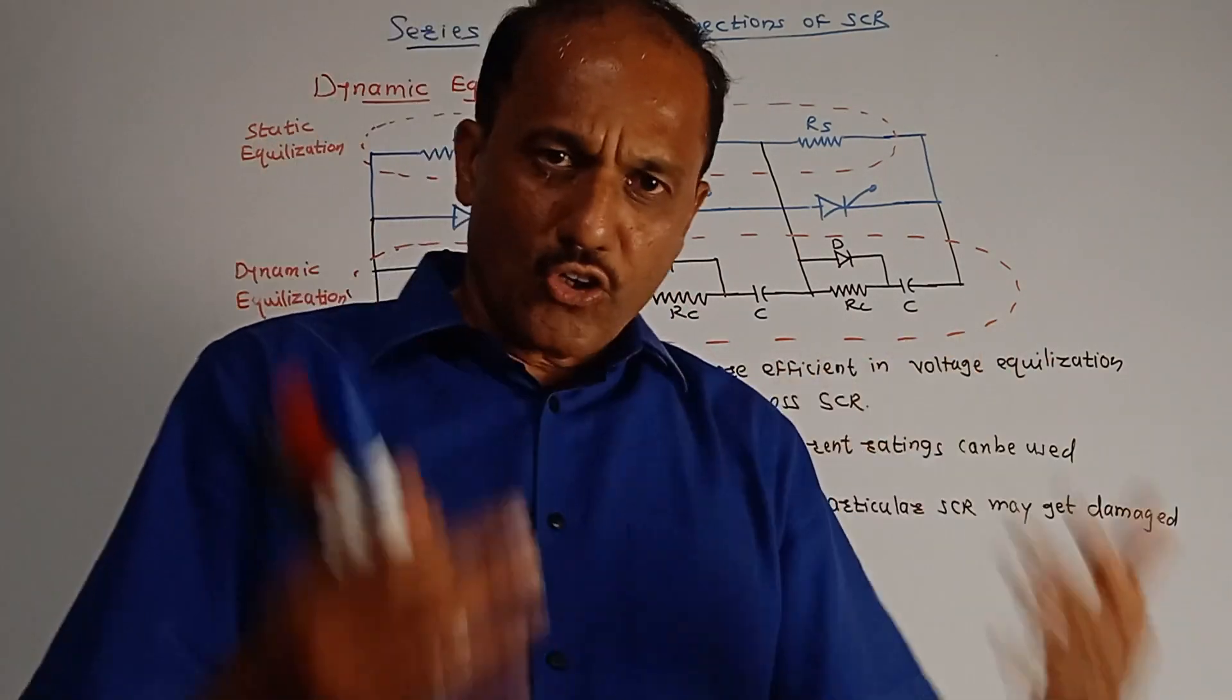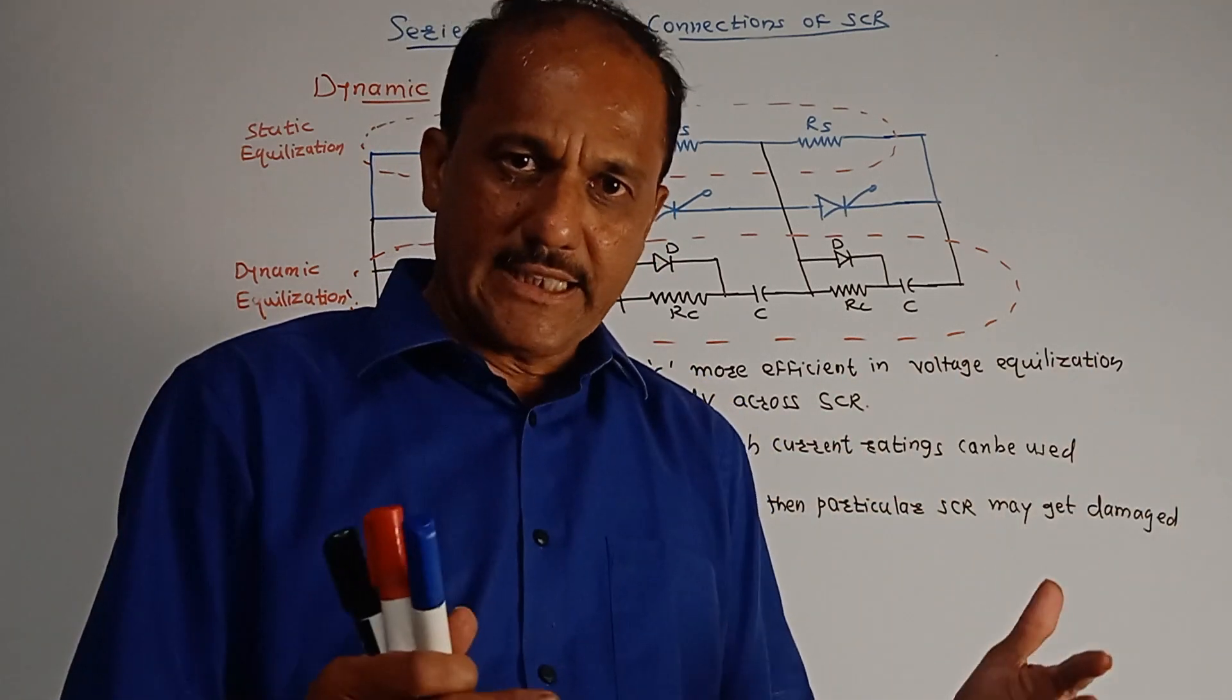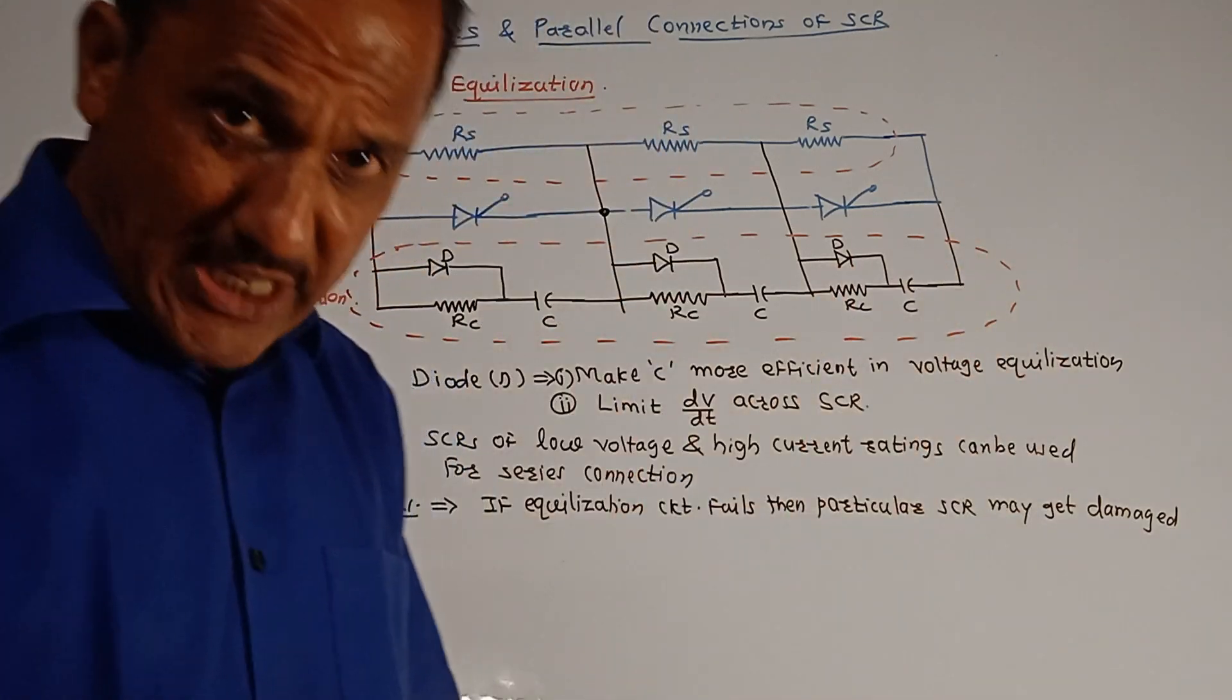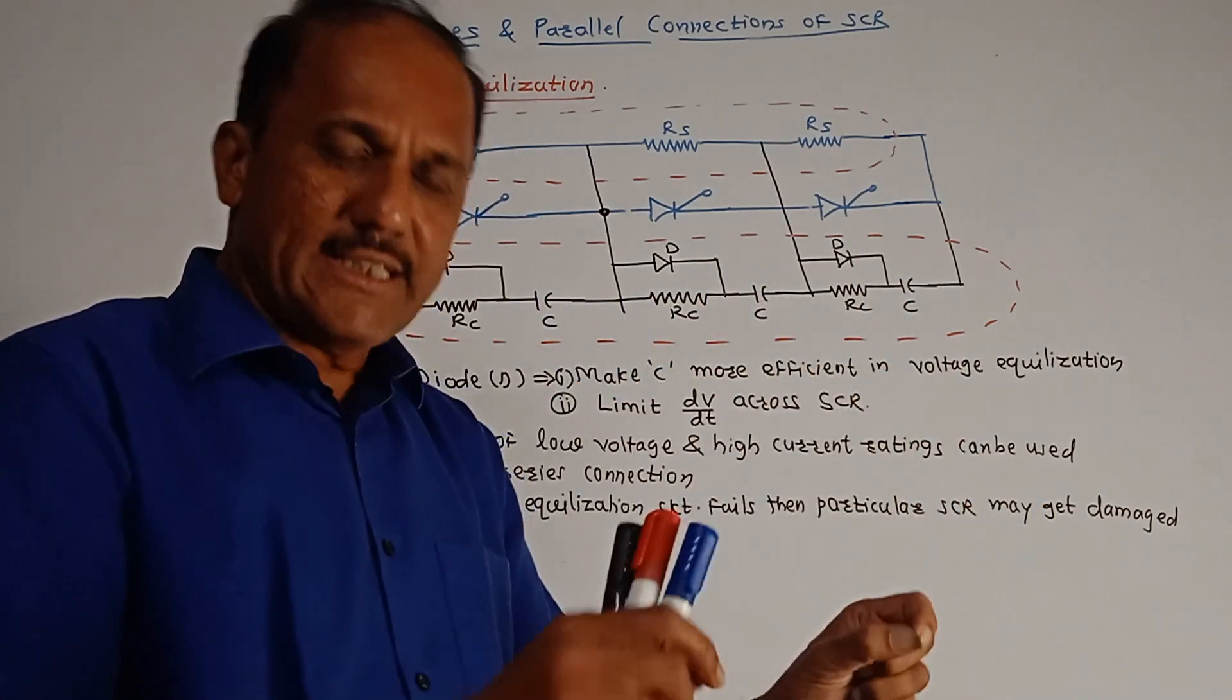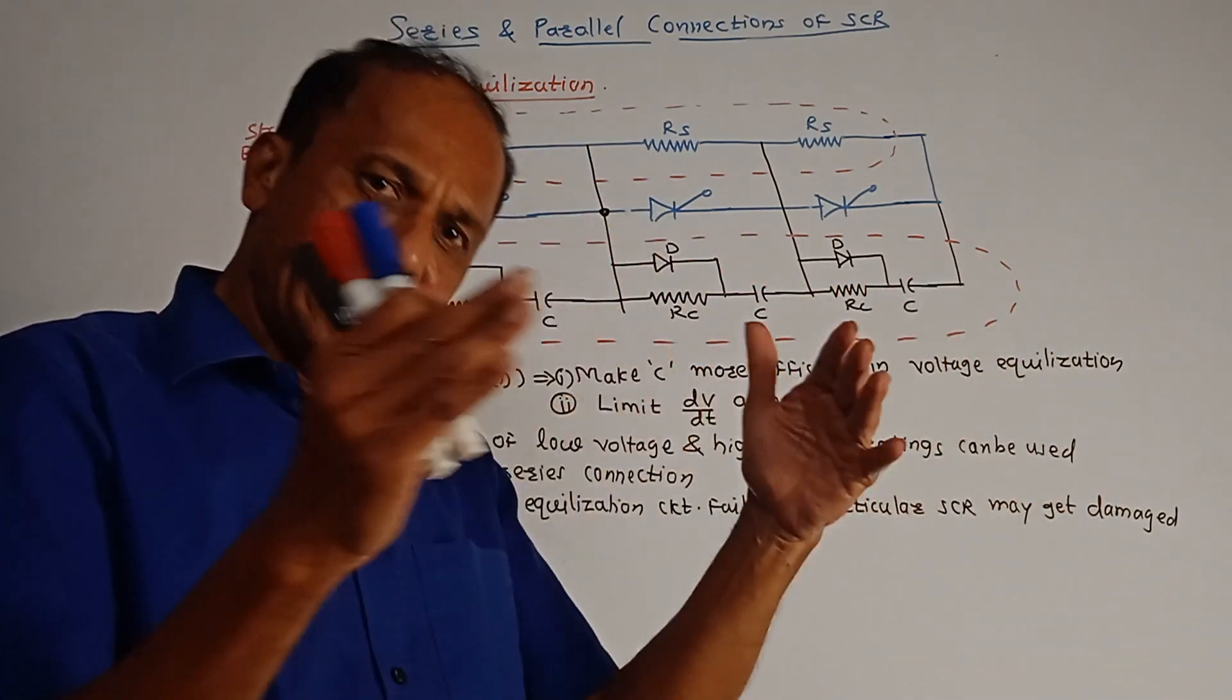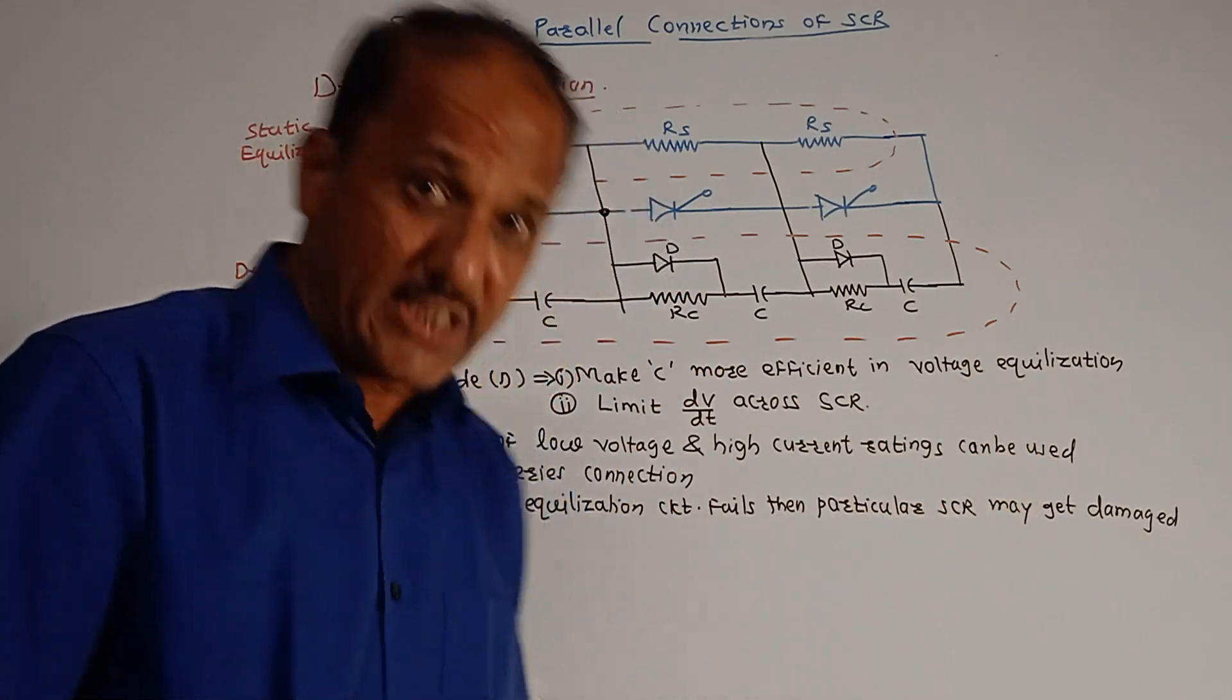See, in case of turning on of SCR or turning off SCR, or when you are using SCRs for some high frequency applications, in such cases, in case of dynamic state of SCR, the voltage across individual SCR may be different. So to obtain same voltage across individual SCR, if you are using those SCRs in a series combination, then a particular circuitry is used which is called dynamic equalization circuit.